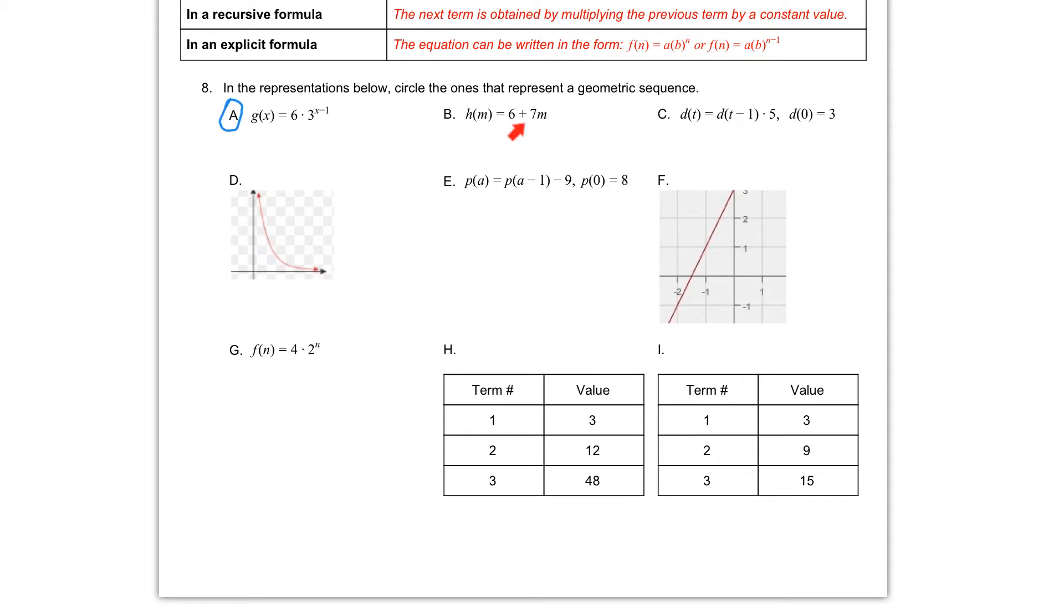If we move to letter C, we have d of t is equal to d of t minus 1 times 5. This is our recursive formula. We're given that d of 0 is equal to 3. What we want to point out though is that we are multiplying that previous term by 5 each time. So this multiplying by 5 right here indicates to us that it is a geometric sequence. So we can go ahead and circle letter C.